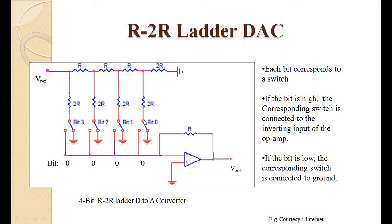Right now all switches are connected to ground because the bits are 0000. If a bit is 0, it is connected to ground; if a bit is 1, the switch is connected to Vref, which then feeds into the input of the op-amp.